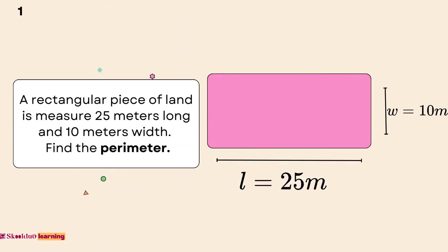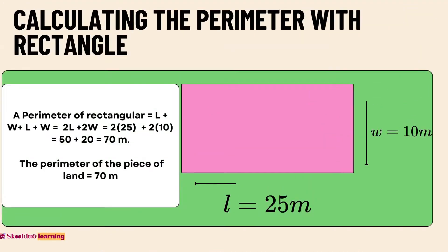A. Perimeter of a rectangle is equal to L plus W plus L plus W, which is 25 plus 10 plus 25 plus 10, equaling 70 meters. Therefore, the perimeter of the piece of land is equal to 70 meters.